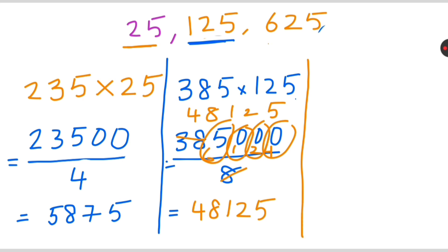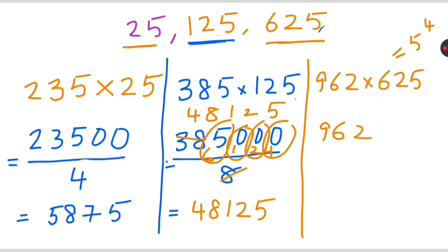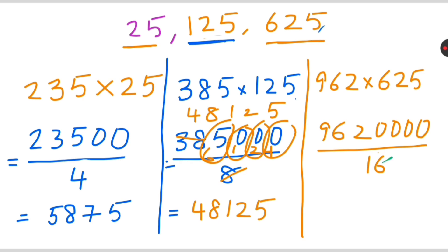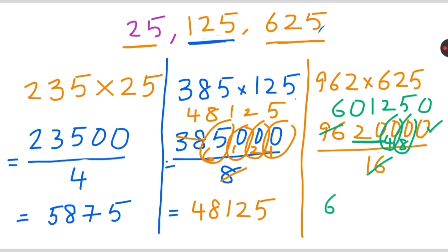Now let's apply this with 625. Take the number 962 times 625. Since 625 is 5 raised to 4 of 4, we add 4 zeros and divide by 2 raised to 4 of 4, which is 16. We know 16 times 6 is 96 — completely done, so add one zero. Then 16 times 1 is 16, remainder 4; 16 times 2 is 32, remainder 8; 16 times 5 is 80. The answer is 601250.